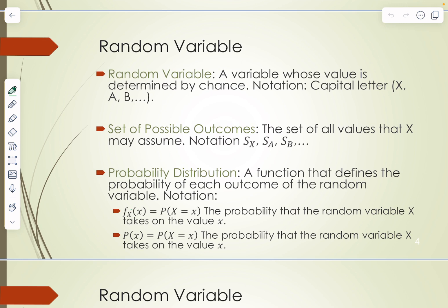A probability distribution is a function that defines the probability of each outcome of the random variable. The notation is F with a subscript of the random variable you're talking about. This is sometimes written as just P, where you use the lowercase version of the random variable name. That lowercase version represents a particular determined value that the random variable could be, and the function gives you the probability that the random variable equals that particular value.